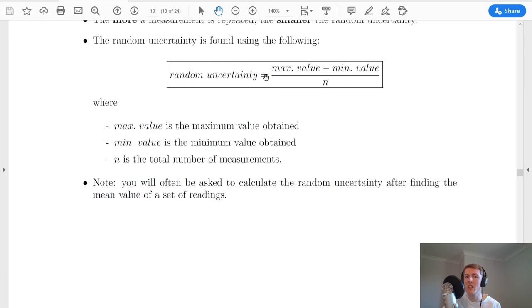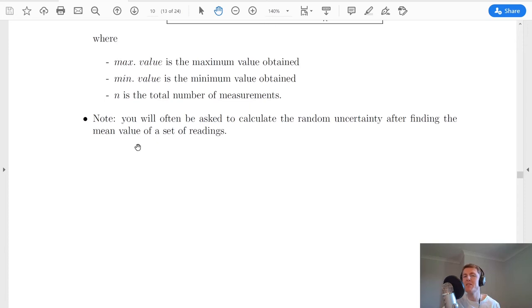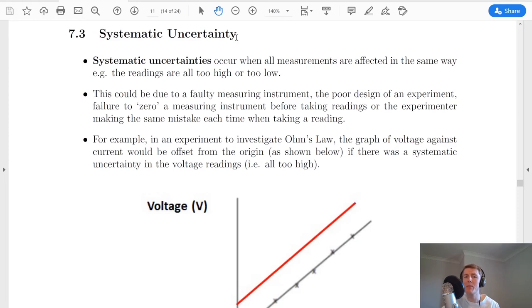Now the random uncertainty is given by this relationship here, where random uncertainty is equal to the maximum value minus the minimum value divided by the number of measurements. So if you've got a list of measurements, you take the biggest number, subtract the smallest number, and divide by how many measurements you have in total. Remember that a common question in the higher course was that you could be asked to find a mean value of a set of readings, and then asked to calculate the random uncertainty in that mean.